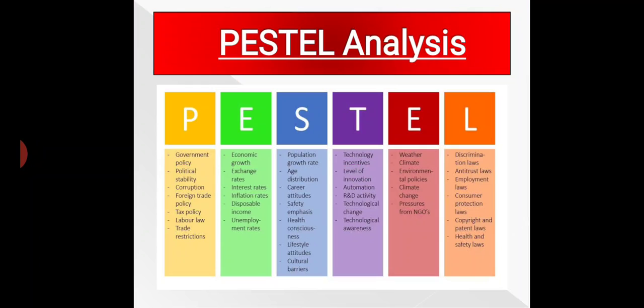Here I have shown a diagram of PESTEL Analysis, and as you can see, each alphabet in PESTEL stands for a different factor. P stands for political factor, E for economical, S for social.